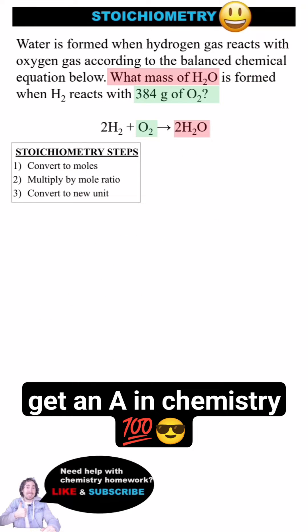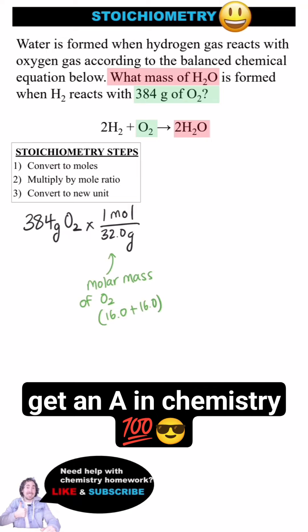When I solve stoichiometry problems like this one, I follow these steps. I'll take the given measurement and convert it to moles by dividing by the molar mass of O₂, which is 32 — 2 times the molar mass of oxygen from the periodic table. Then multiply by the mole ratio of water to oxygen gas, which is 2 over 1.